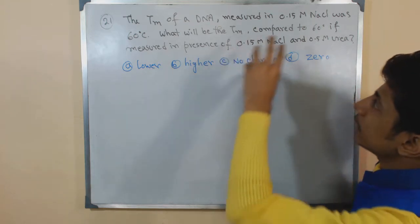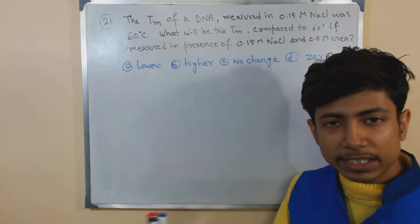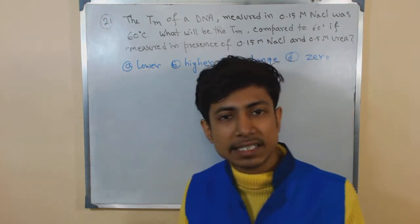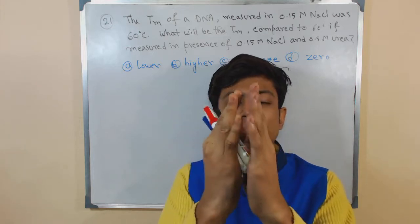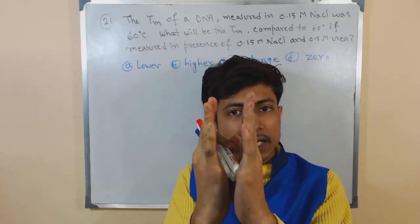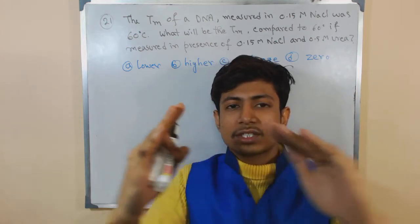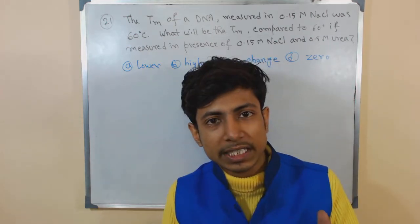NaCl is a disrupting agent for DNA, Urea is also a destabilizing agent for DNA. Urea destabilizes DNA, melts DNA that means they break those hydrogen bonds that are present in between the complementary strands. As a result strands separate, that is called the denaturation of the DNA.